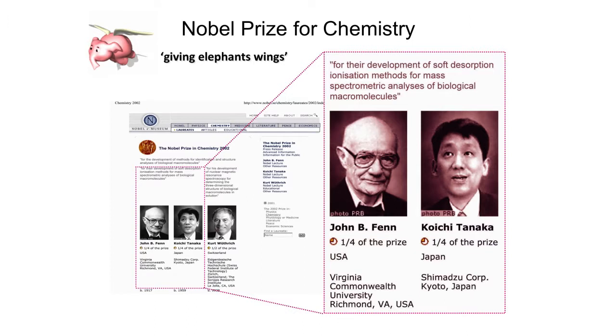The Nobel Prize for chemistry was given to John Fenn, who was about in his 80s when he received it. What he'd done was to take a technique considered a very small molecule technique and he said he had given elephants wings — a nice analogy. If you think of a small molecule like aspirin with molecular weight 180, compared to a big protein like myoglobin at 16,000 molecular weight, that's the transformation he'd made. He'd effectively given these molecular elephants wings to fly through the mass spectrometer, because you still have to get your molecule into the atmosphere to analyse it.